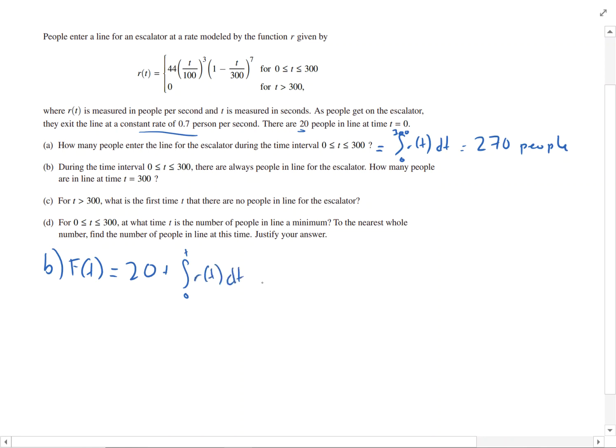DT, minus 0.7 T. And if we run that integral for F of 300, that's going to be 80 people.